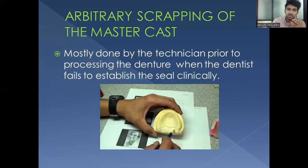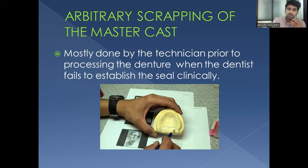Arbitrary scraping of the cast is done without evidence-based steps, mostly by the technician prior to processing the denture when the dentist fails to establish the seal clinically. The cast is trimmed to a depth of 1 to 1.5 mm along the area marked as the anterior and posterior vibrating lines, based on the clinician's judgment.